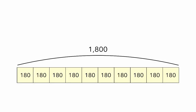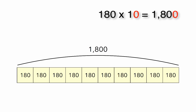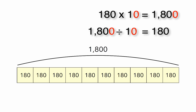Let's look at the number 1,800. 180 times 10 equals 1,800. So, 1,800 divided by 10 equals 180. Let's look at our bar model. Here you'll see 1,800 broken up into 10 equal groups. Each group has 180. 180 times 10 equals 1,800, so 1,800 divided by 10 equals 180.